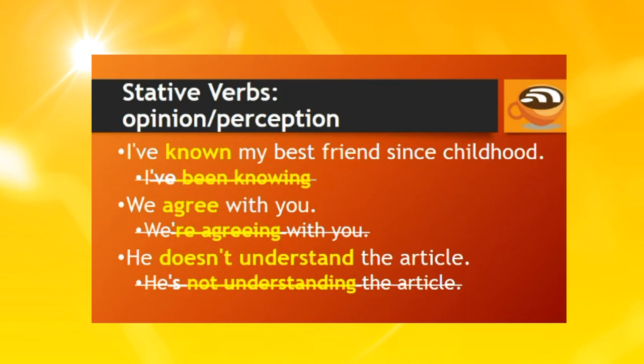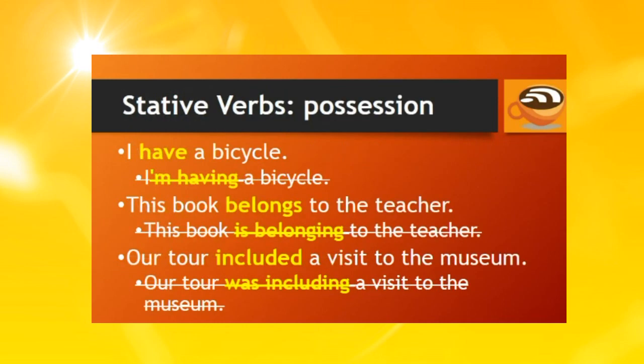He doesn't understand the article — don't say 'he's not understanding the article.' Here are some examples of stative verbs with possession. You can say 'I have a bicycle,' but not 'I'm having a bicycle.' Say 'this book belongs to the teacher,' not 'this book is belonging to the teacher.' Our tour included a visit to the museum — not 'our tour was including a visit to the museum.'